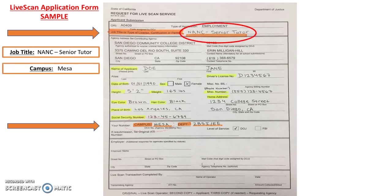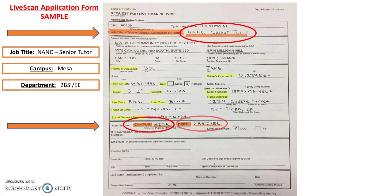The department is 2BSI/EE. The EE at the end of the line are the initials of the current staff member who processes these forms. If this person changes, the initials will also change and you will be required to write different initials here. Please pay attention to this line in the email that you receive.